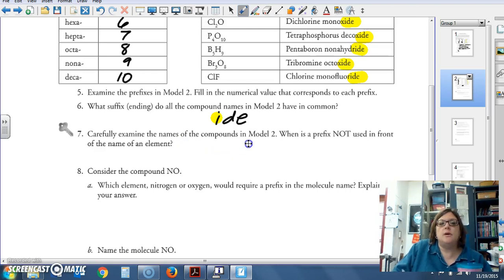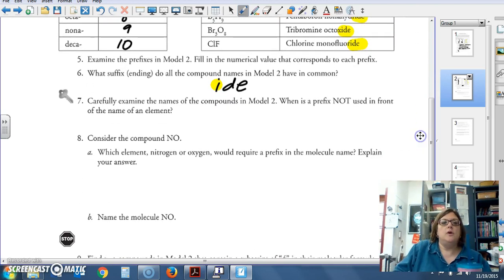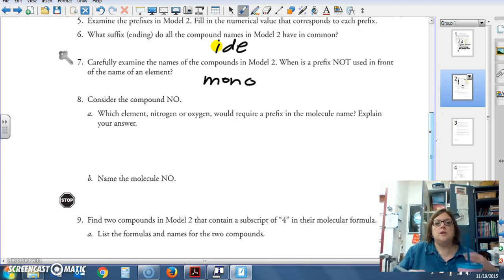Carefully examine the names of compounds in model two. What prefix, when is a prefix not used in front of the name of an element? All of these second ones have prefixes. But the first one, boron doesn't have a prefix. Sulfur doesn't have a prefix. Iodine doesn't. Nitrogen doesn't. But dinitrogen does. What's different about these four compared to dinitrogen? What's that you say? They all start with just one? You are correct. So, you could call it monoboron, but that would be kind of redundant. So, we just don't. You may drop the mono when it is the first element in a binary compound has just one atom in it, you can drop the mono.